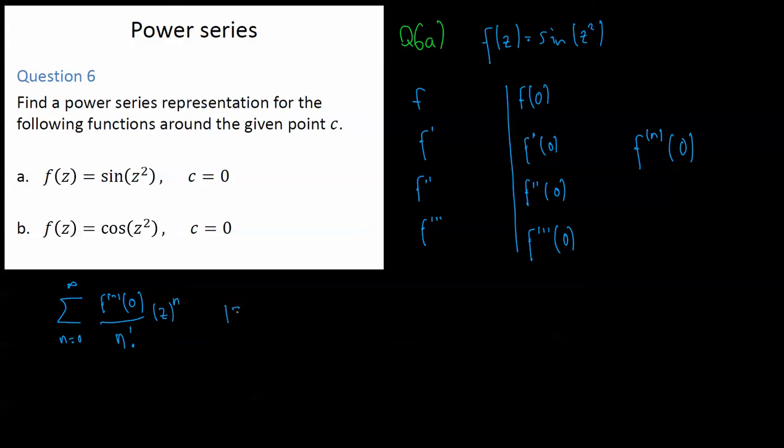And that will be for mod z is less than infinity. And the reason why it's infinity is because there's no singularities in sin z squared. So that was one approach, but you probably realized pretty quickly on your assignment that that's not the best approach.